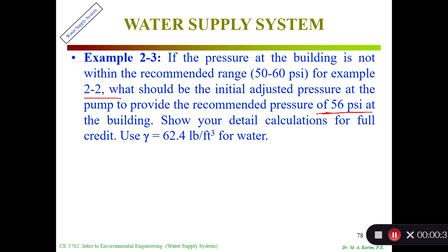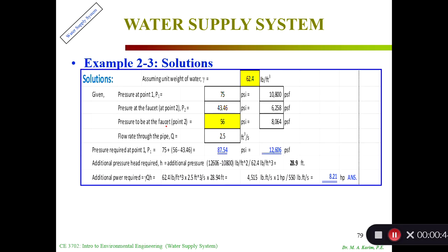We have to want 56 psi, but from the last problem we have only 43.46 psi, so we have to increase it. Show your detailed work. This is the pressure at point 1, we don't need that because that's what we're looking for - how much more we need.